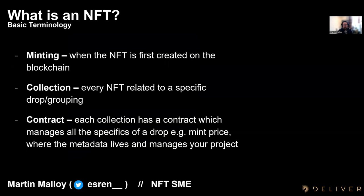Some basic terminology to make sure we're all on the same page. Minting is when an NFT is first created on the blockchain — someone buys it or is given it and it's first created. A collection is a collection of NFTs relating to a particular contract. A contract is where all of the specifics live, things like mint price, and where the metadata for that collection lives.